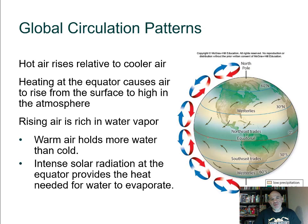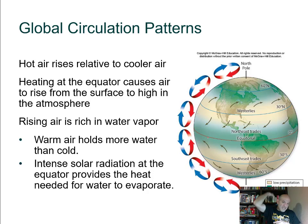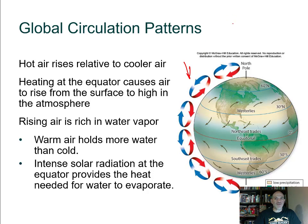Global circulation patterns arise because when things get heated they expand, becoming less dense — so hot air rises. The most heating occurs near the equator, so warm air rises there. As it rises, it cools down, becomes more dense, and falls back down, creating convection cells that rotate vertically. Imagine the ground as a surface with the equator in the middle: air rises at the equator and moves north or south.